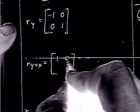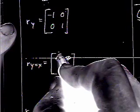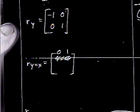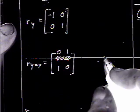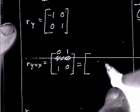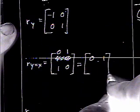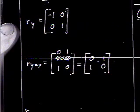So if you want to take the identity matrix and switch x and y to get the reflection matrix for y equals x, you take the bottom row and move it to the top, and the top row moves down. Let me redo that so it looks better.